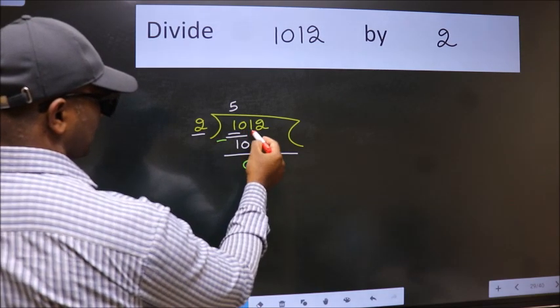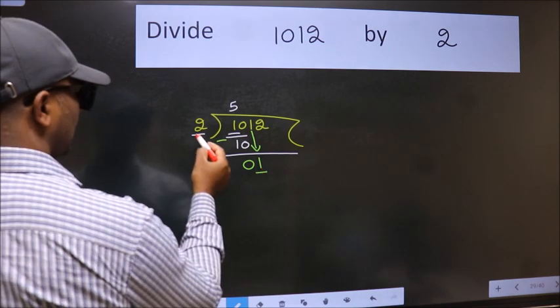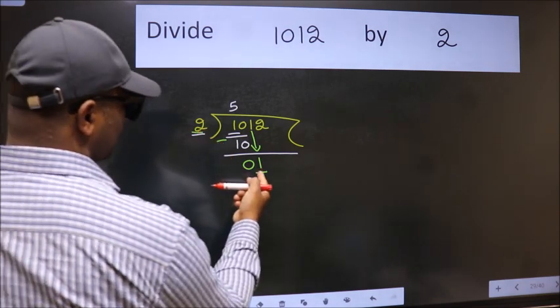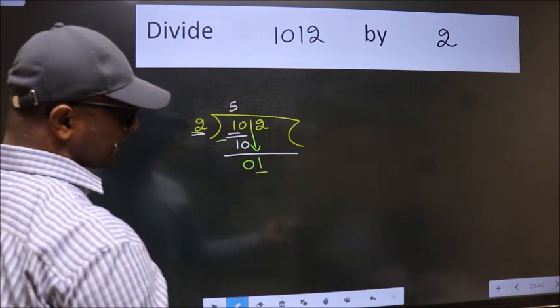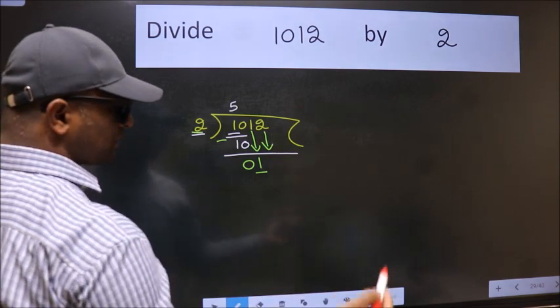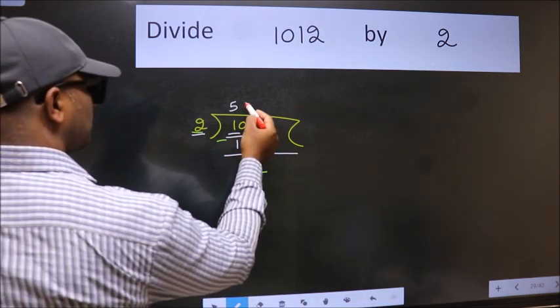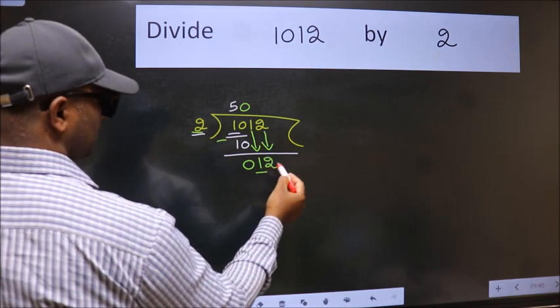After this, bring down the beside number. So 1 down. Now here we have 1 and here 2. 1 is smaller than 2. So we should bring down the second number. And the rule to bring down second number is put 0 here. Then only we can bring this number down.